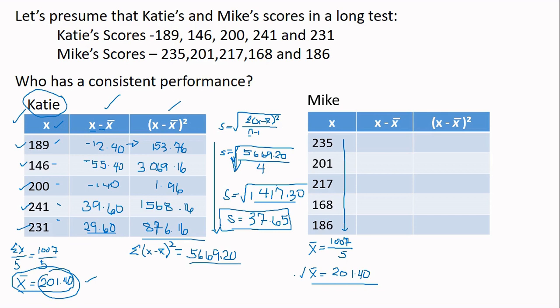For the second column, we'll subtract the raw scores against the mean. So we have 33.60 here. Next is 201 minus 201.40, so that is negative 0.40. Next is 217 minus 201.40, that is 15.60. Next is 168 minus 201.40, that is negative 33.40. And last is 186 minus 201.40, that is negative 15.40.